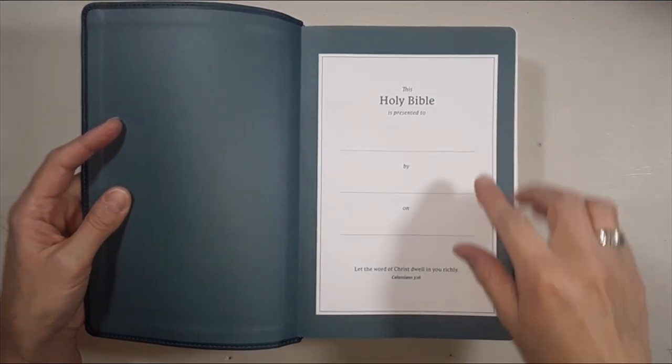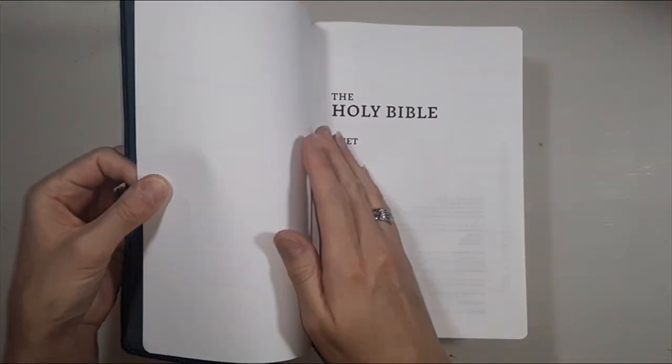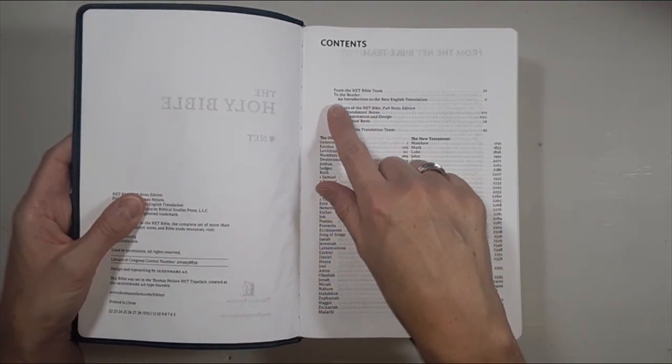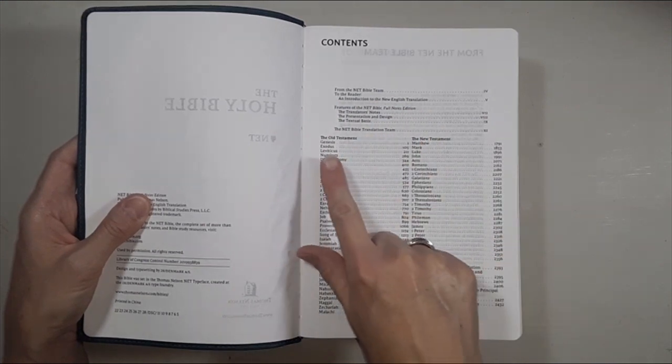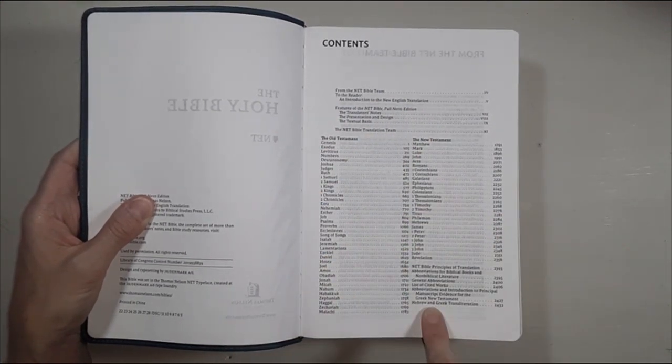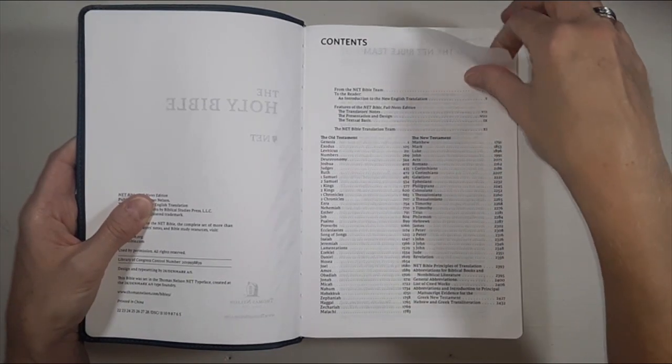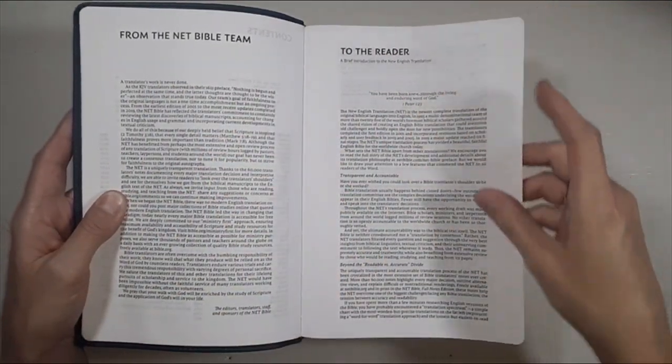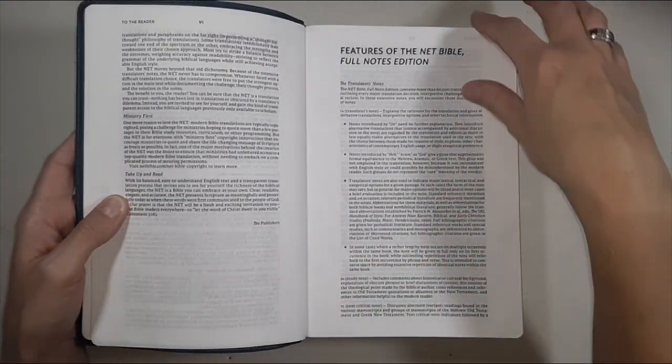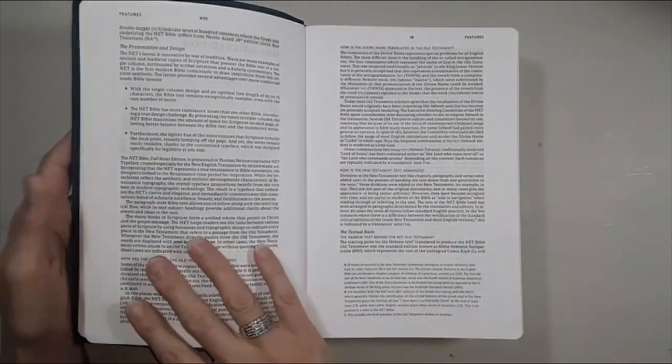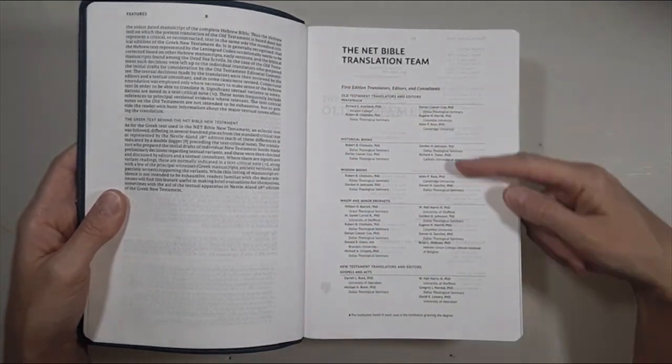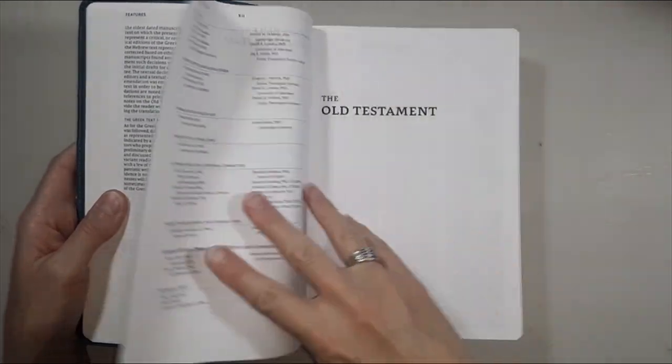It's got the "This Bible is Presented To" page: "Let the word of Christ dwell in you richly." Then the Holy Bible with contents from the NET Bible team to the reader, features, the Old Testament, the New Testament. It tells who all has been involved in the translation there, the NET translation team.